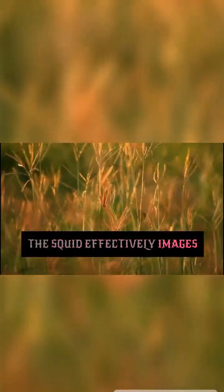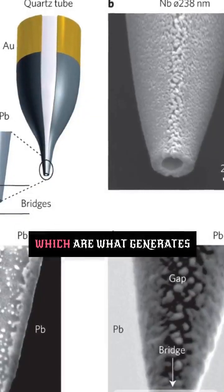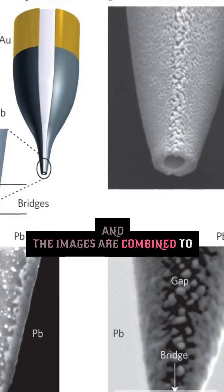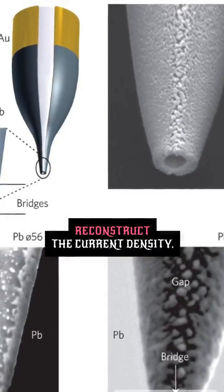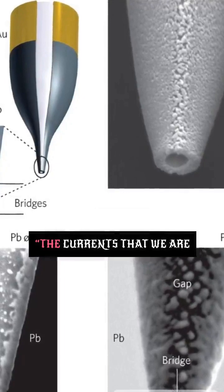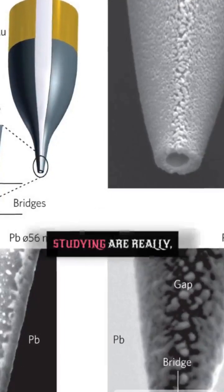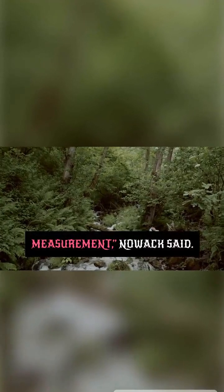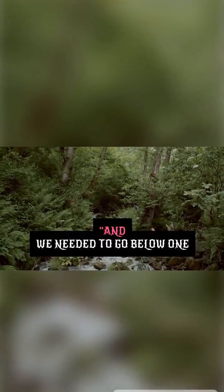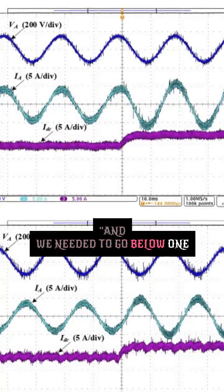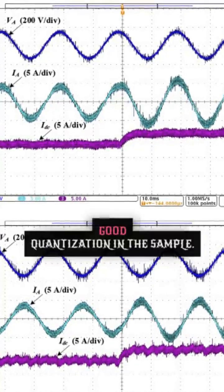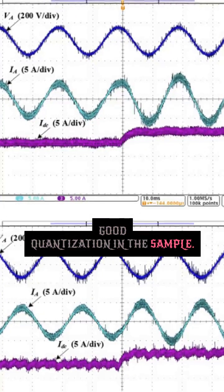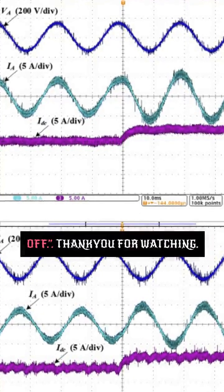The SQUID effectively images the current flows, which generate the magnetic field, and the images are combined to reconstruct the current density. The currents that we are studying are really, really small, so it's a difficult measurement, Nowak said. We needed to go below 1 Kelvin in temperature to get good quantization in the sample. I'm proud that we pulled that off.